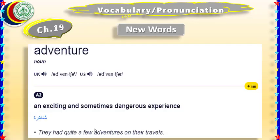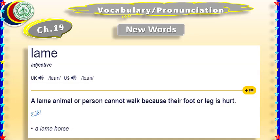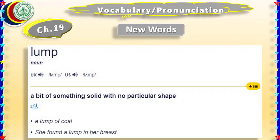We have come to our lesson now — chapter 19. First of all, we shall look at the new words. The word 'adventure' means an exciting and sometimes dangerous experience. The word 'lame' means a lame animal or person who could not walk properly — their foot or leg is hurt.